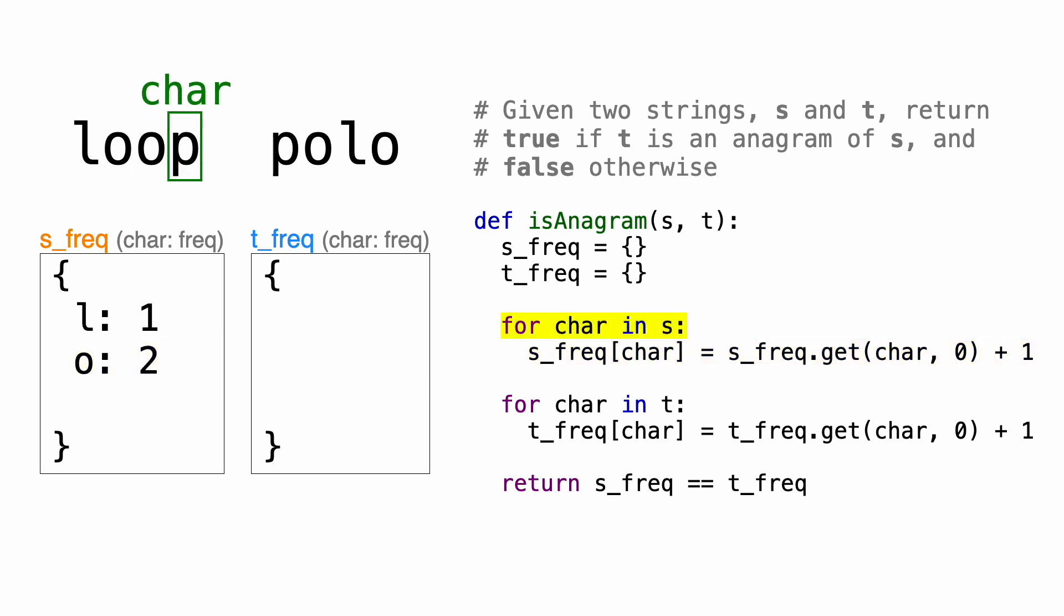Finally, the last character is p, which is not in a dictionary, so we create a key-value pair of p which corresponds to one. Now we're done with s, and we can move on to the next string, t.